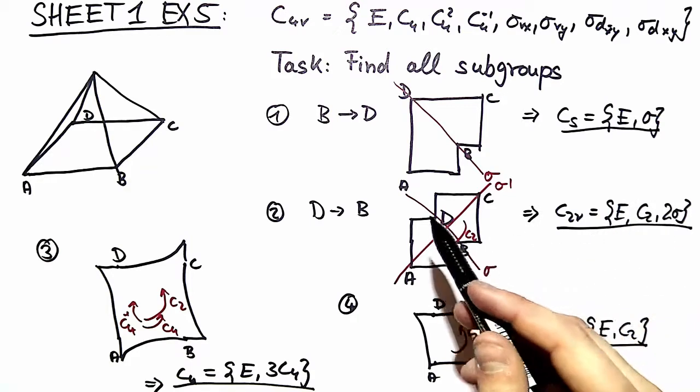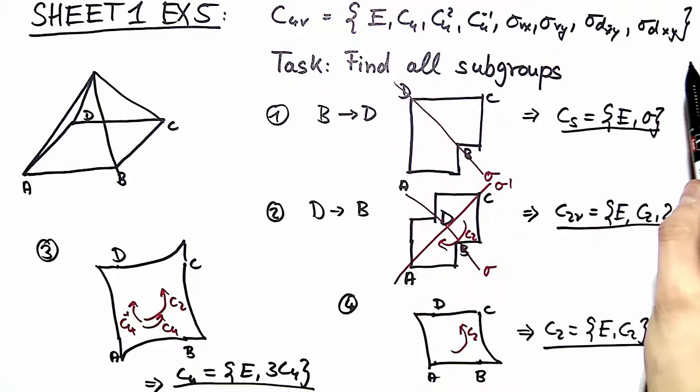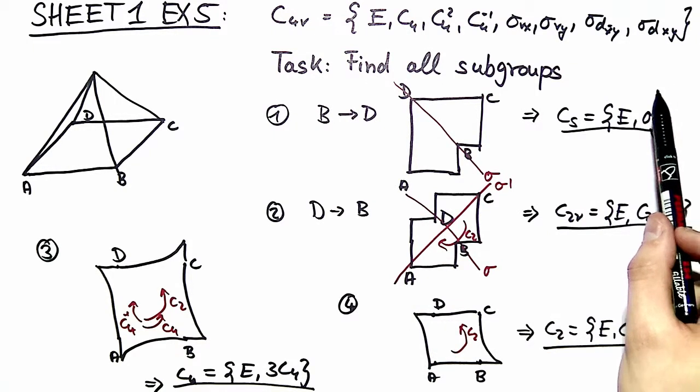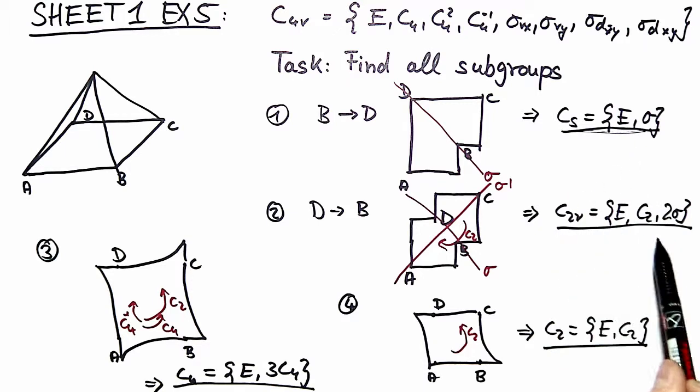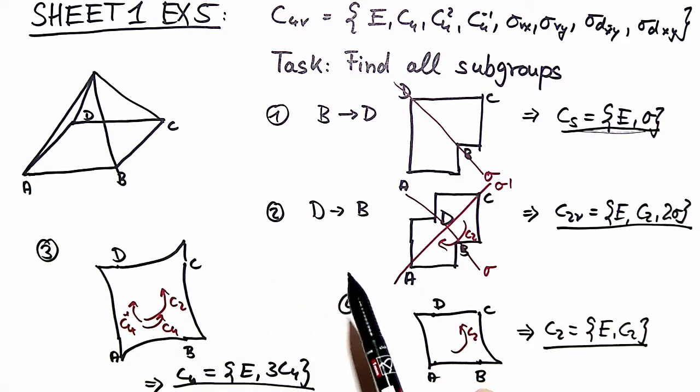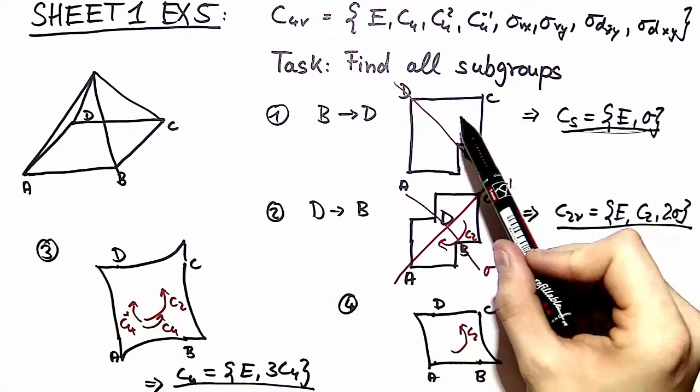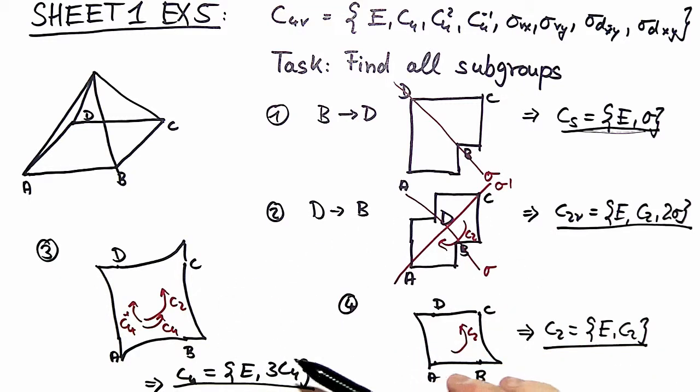Of course the easiest subgroup, the trivial subgroup, is the identity or the whole group which is left out in the explanation because it's too trivial. So you have those four real subgroups by distorting the system. Remember that it is not allowed to create new symmetries. You can only destroy symmetries by introducing new edges or corners and this is how you do it.